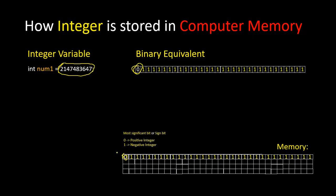This number will be stored with the most significant bit or sign bit as 0, confirming it is a positive integer. Now I think you have a clear understanding of how computers store integers, whether positive or negative. Thanks for watching this video — I will see you in the next one. Bye bye.